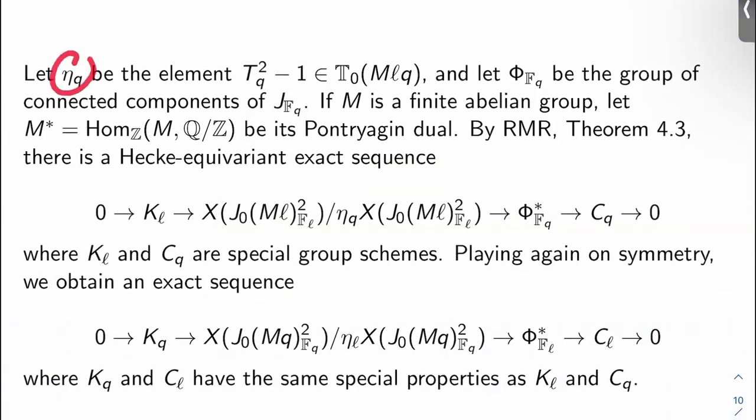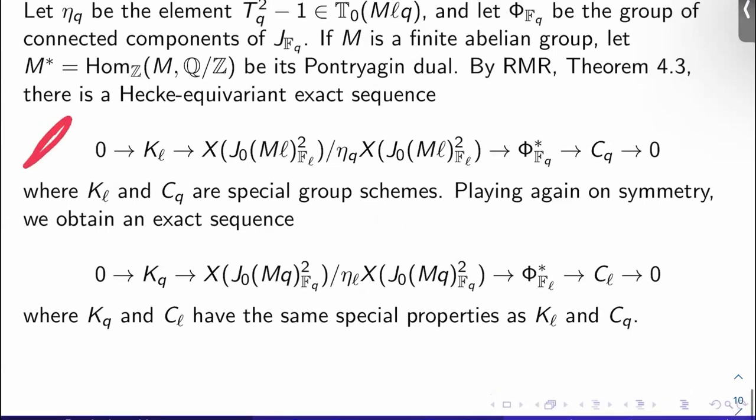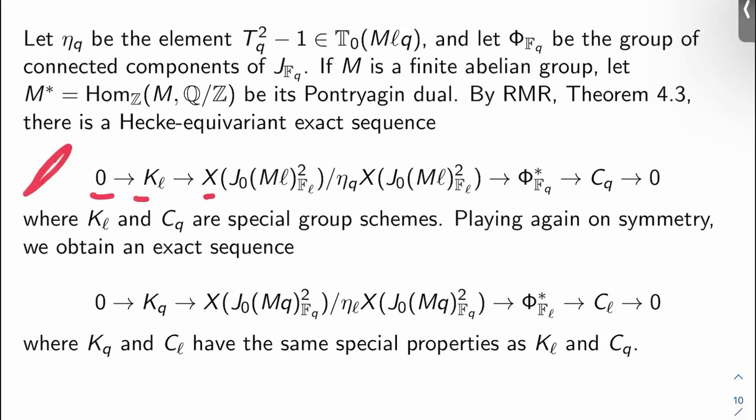Okay, let η_q be the element T_q² - 1 in T_0(Mℓq), and let Φ_{J_q} be the group of connected components of J mod q, so that's the Jacobian base change to F_q. If M is a finite abelian group from here on out, let's let M* be the Z maps from M to Q/Z, that'll be its Pontryagin dual. By Ribet's paper theorem 4.3, there's a Hecke equivariant exact sequence, which I'll call Ribet's third exact sequence,